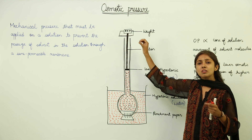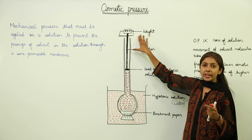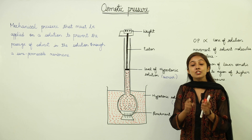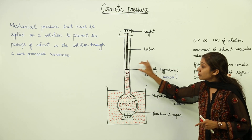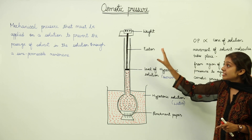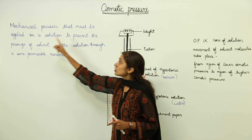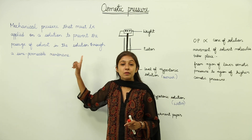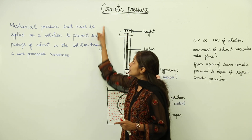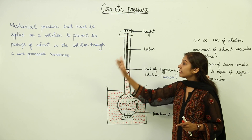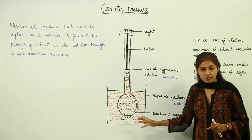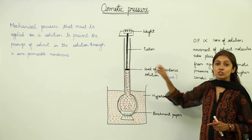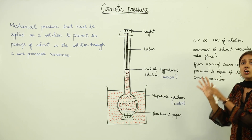Now, put some additional weights. After putting additional weights, there will be no movement of the piston. The piston will not move now. This is how we can demonstrate osmotic pressure — means the mechanical pressure that must be applied on a solution to prevent the passage of solvent in the solution through a semi-permeable membrane. When we put some additional weight, the piston is not going to move. So this is how we are defining osmotic pressure.